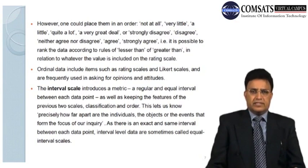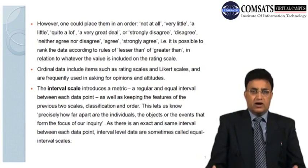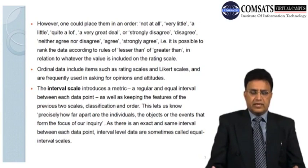The interval scale is the third level. It introduces a metric — a regular and equal interval between each data point — as well as keeping the features of the previous two scales: classification and order. This lets us know precisely how far apart are the individuals, objects, or events that form the focus of our inquiry. Because there is an exact and same interval between each data point, interval-level data are sometimes called equal interval scales.